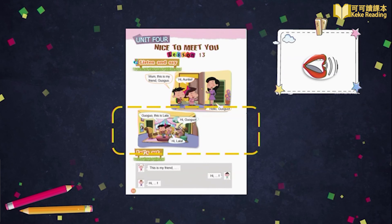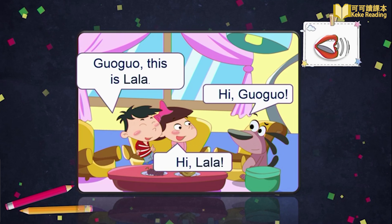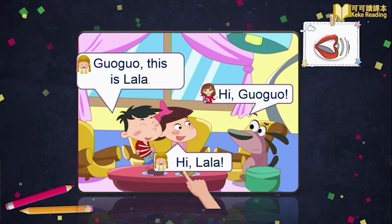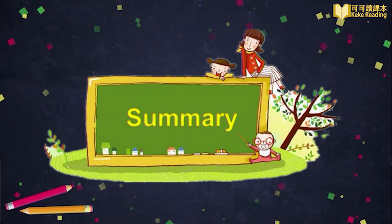Let's follow Mau Mau to the living room. This time, I will be Lala. You will be Mau Mau and Guo Guo. Okay? Let's go. Guo Guo, this is Lala. Hi, Guo Guo. Hi, Lala. Wonderful.